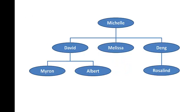Before we do that, let's take a look at a sample organization chart. You've got Michelle who is the chief executive at the top of the hierarchy. You've got David, Melissa and Deng reporting to Michelle. And then you've got Myron and Albert reporting to David and Rosalind reporting to Deng. That's the organization chart. So clearly, Michelle is an employee and a manager. David, Melissa and Deng are employee and manager. Sorry, David and Deng are employee and manager. Melissa is not a manager, just an employee. Myron, Albert and Rosalind are also not managers, just an employee.